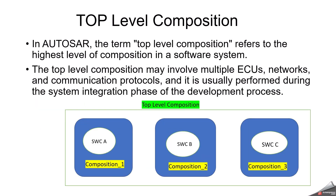Top level composition. In AUTOSAR, the term top level composition refers to the highest level of composition in a software system. It is the composition of the whole vehicle, created during system design. It can contain atomic software component types or composition software component types, and the composition software component type is referenced from a system of category system extract.